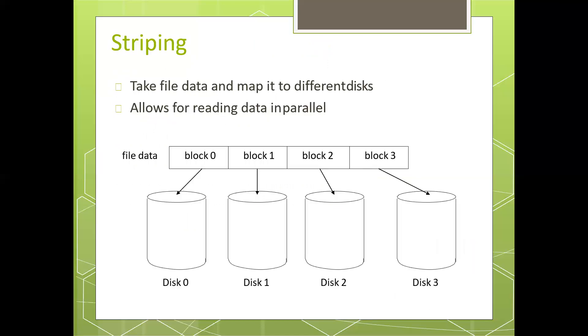The second concept is striping. Take file data and map it to different discs. This allows for reading data in a parallel way.